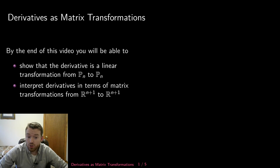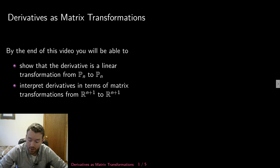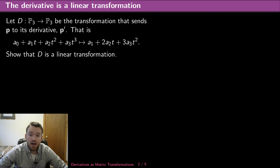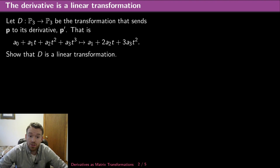By the end of this video, you should be able to do this for general Pn to Pn, showing that the derivative is a linear transformation, and also be able to interpret the derivative in terms of a matrix transformation from R^(n+1) to R^(n+1). I'm going to do P3 to P3. The proof that I give generalizes — it will actually have nothing to do with even polynomials, let alone their degree.